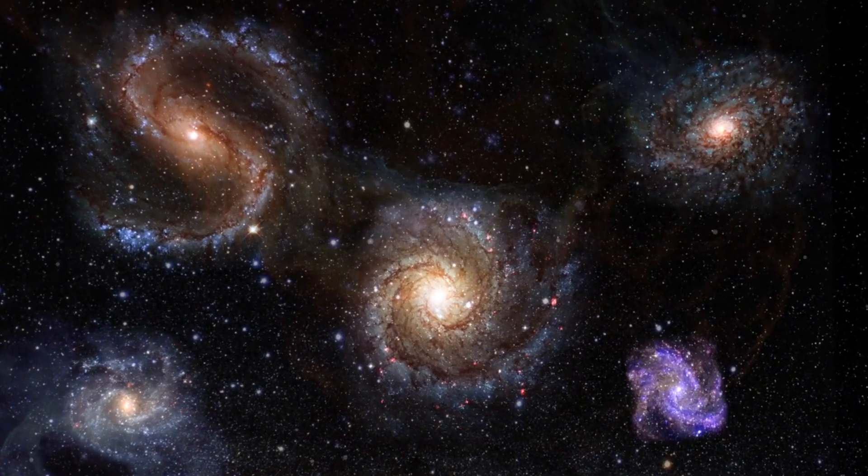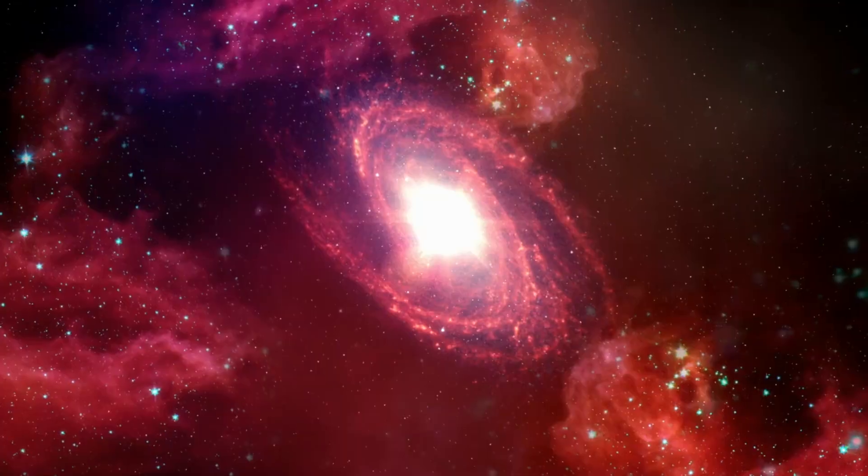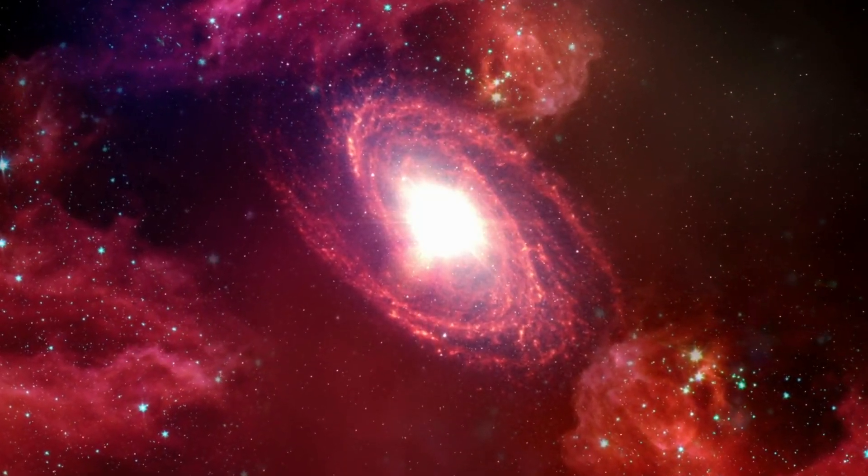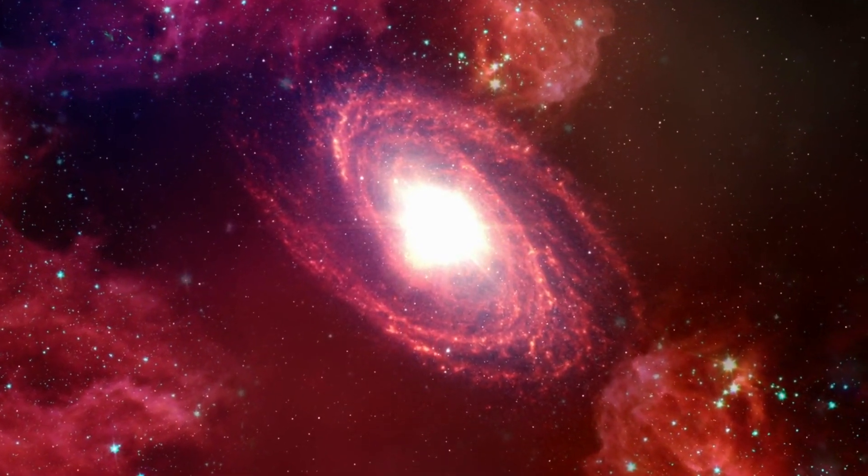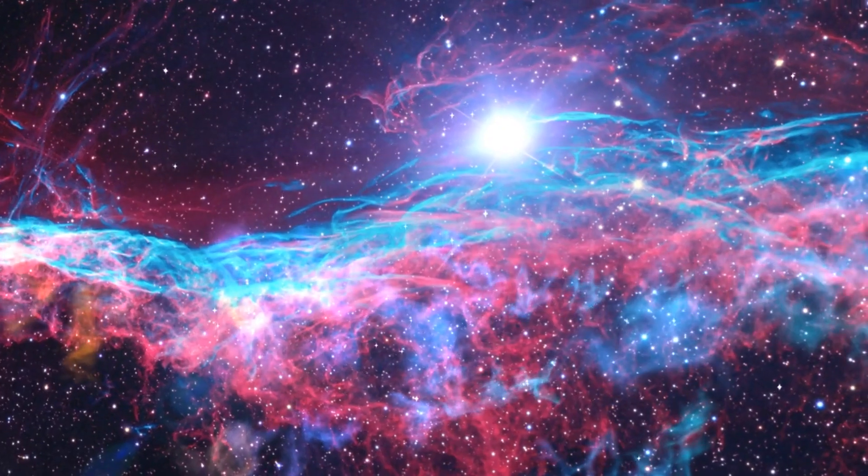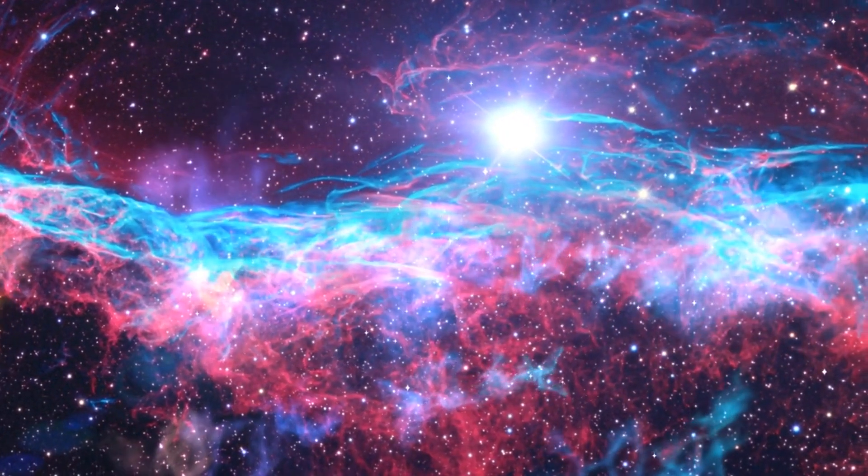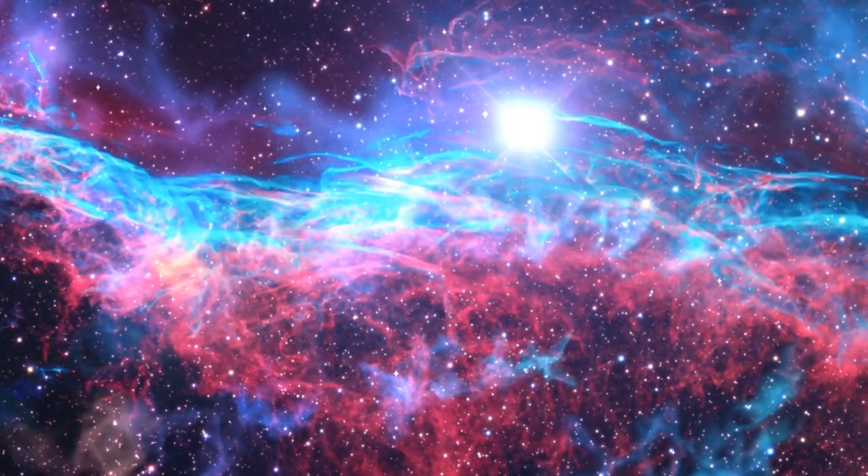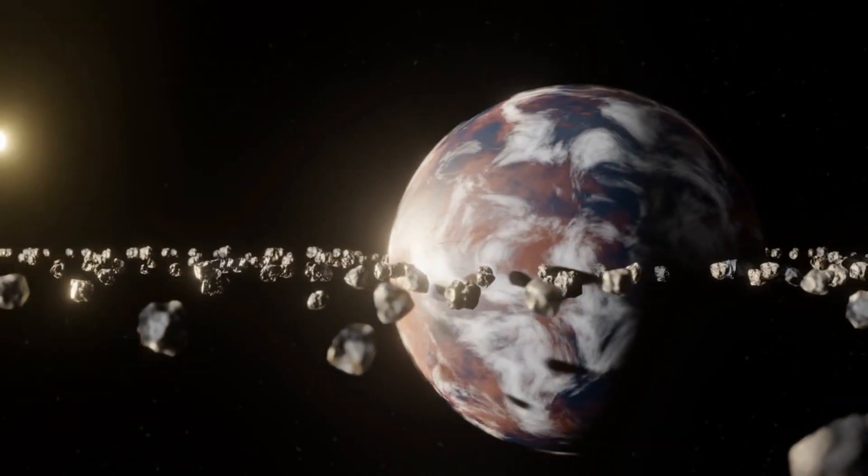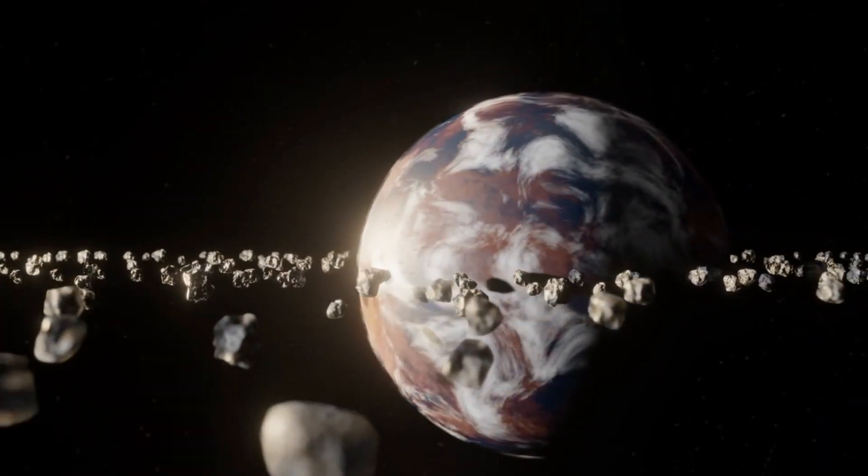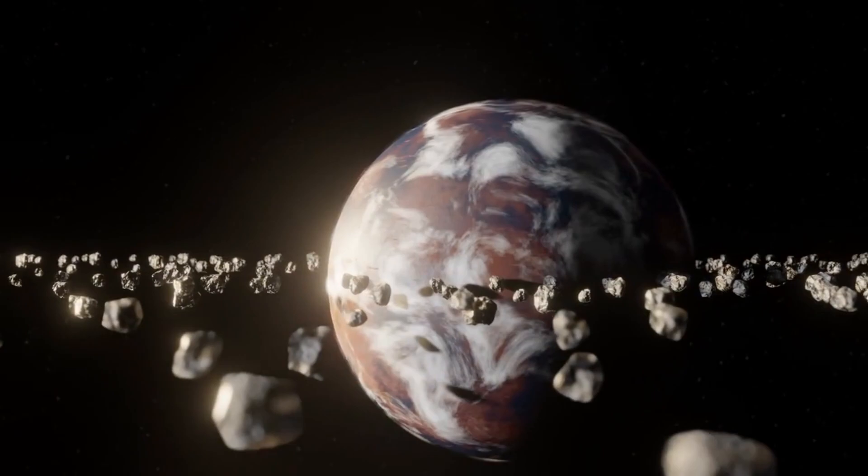Our solar system resides in the Milky Way galaxy. While there may be more than 250 billion stars in the Milky Way, until recently astronomers knew of only one planetary system: our own. That changed in 1992, when radio astronomers detected two rocky planets orbiting a pulsar in the constellation of Virgo.